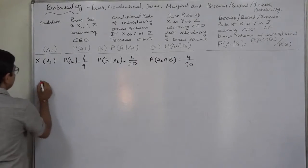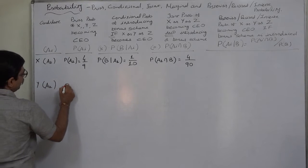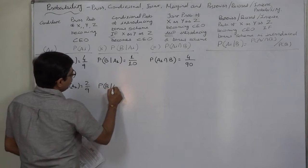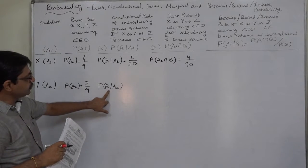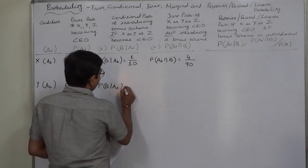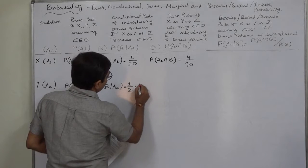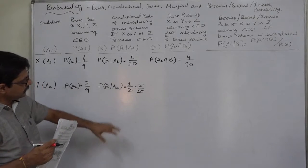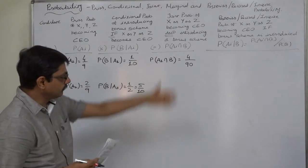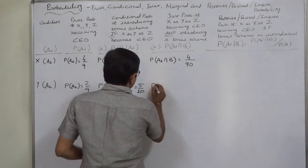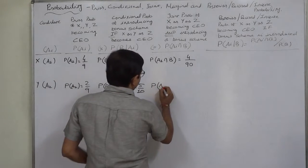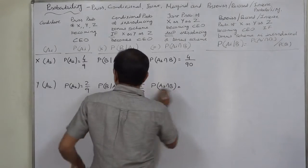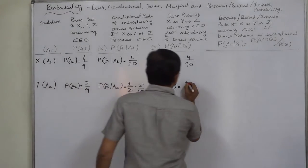The next candidate is Y, using sign A2. P(A2), selection of Y, is 2 by 9. P(B|A2), the conditional probability of introducing a bonus scheme if Y is appointed as CEO, is given to be 1 by 2, which is 5 by 10. I prefer to make the denominator the same to make the calculation of marginal and posterior probability easier. Multiplying these two gives P(A2 ∩ B): 2 by 9 into 5 by 10, that will be 10 by 90.